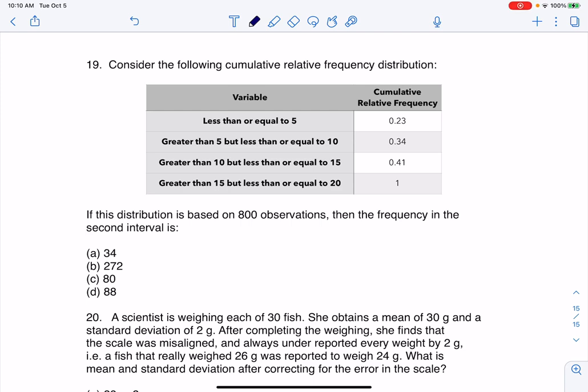Hey everyone, let's take a look at number 19. Consider the following cumulative relative frequency distribution. If this distribution is based on 800 observations, then the frequency in the second interval is, and we got to figure this out.